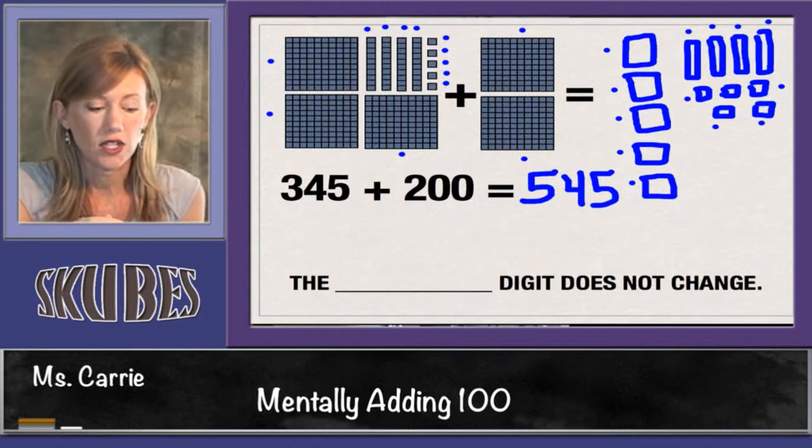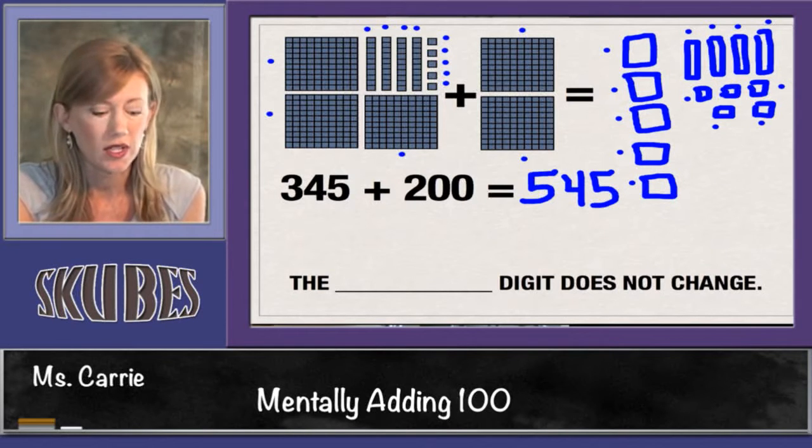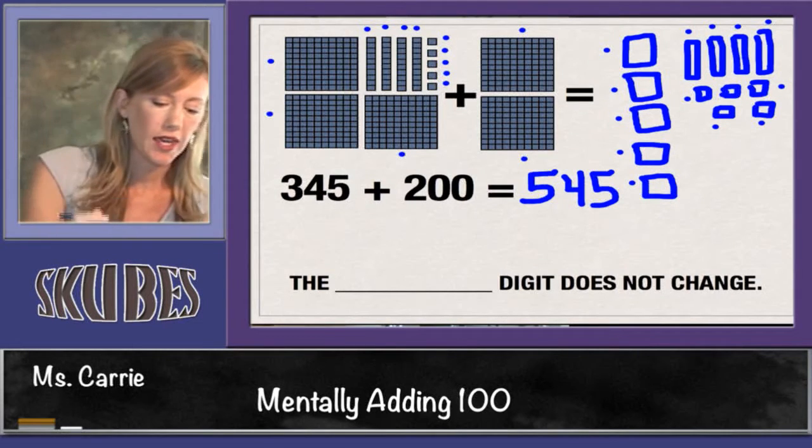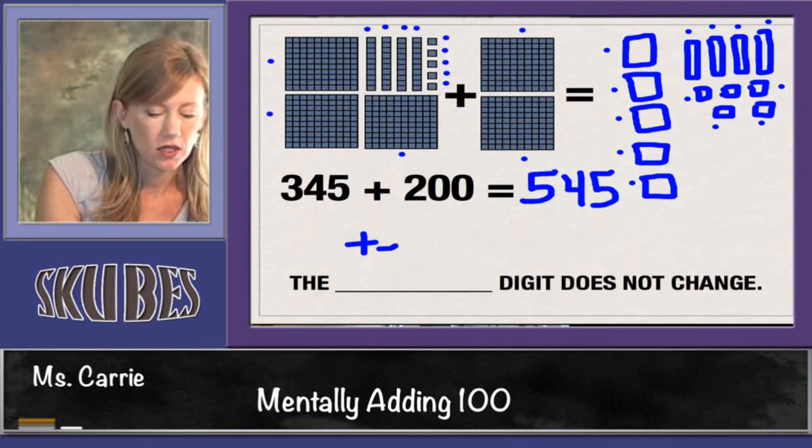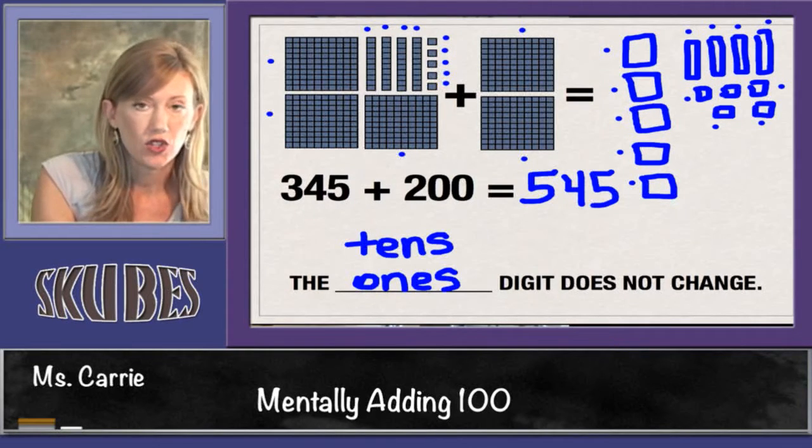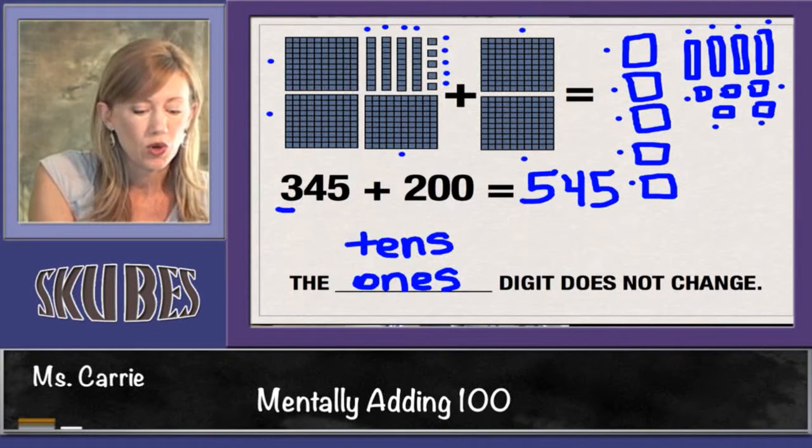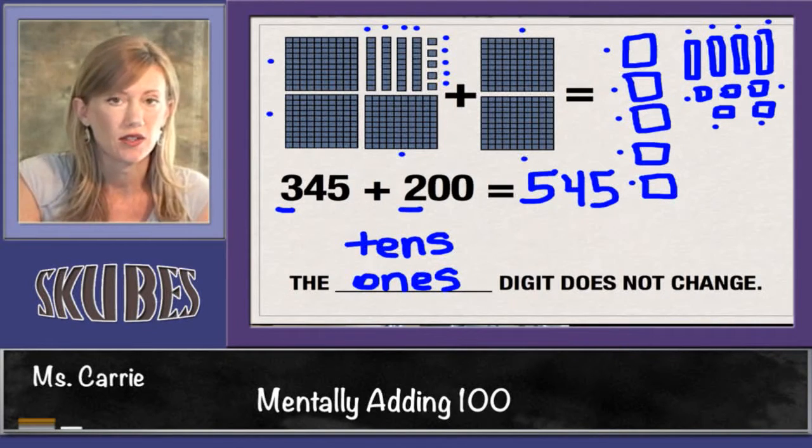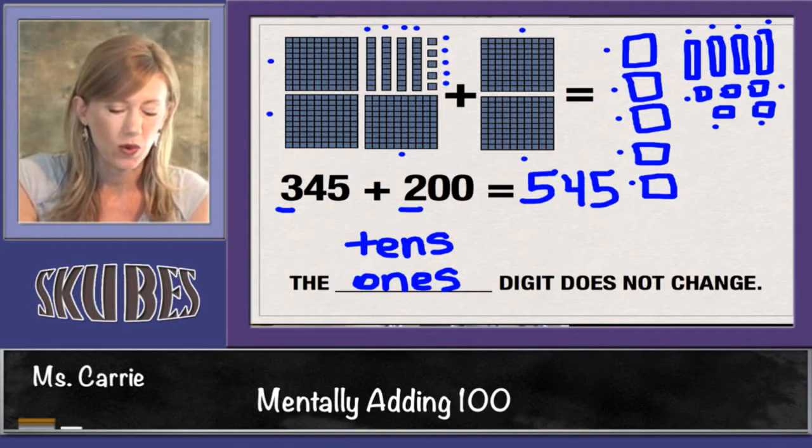You can see that our hundreds changed. We gained two more hundreds, but the tens stayed the same and the ones stayed the same. So again, the tens digit does not change and the ones digit does not change, but the hundreds does. We went up two more hundreds to get to 500. The four stayed the same and the five stayed the same in the ones place.